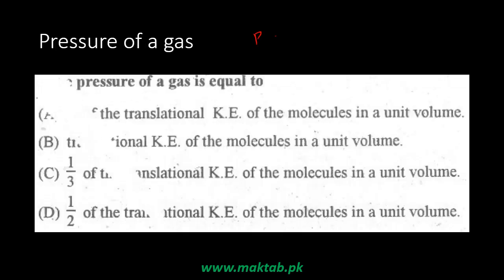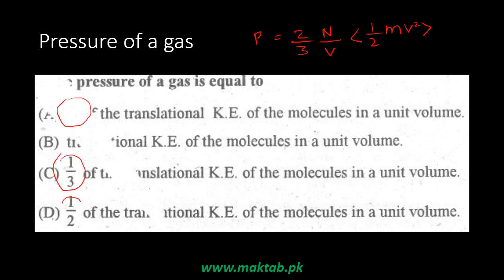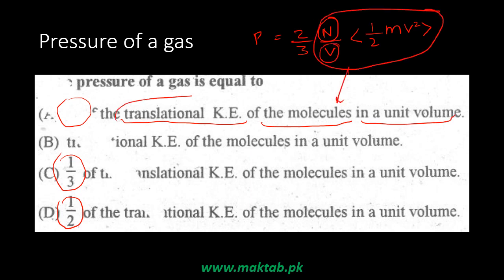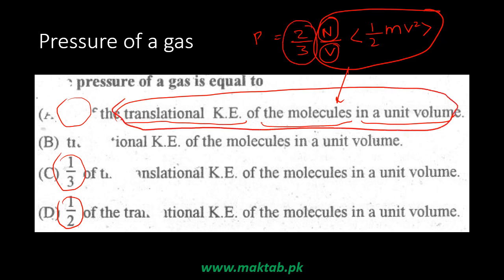The pressure of a gas equals (2/3) times number of molecules per unit volume times kinetic energy. The MCQ asks which fraction of the translational kinetic energy of molecules per unit volume equals pressure. Option B shows no fraction — fraction is 1 — which is wrong. Options C and D are wrong. The correct answer has the factor 2/3, so the correct option is the one showing 2/3.